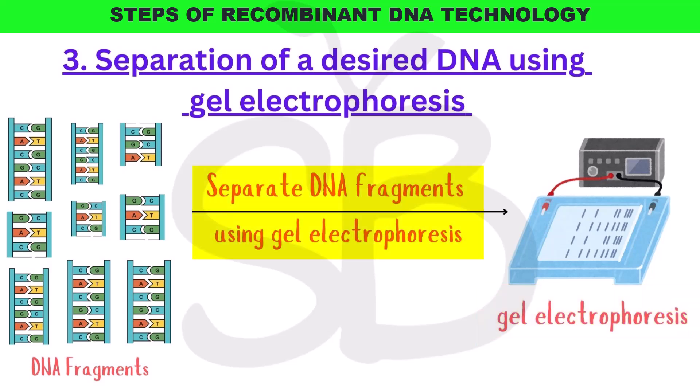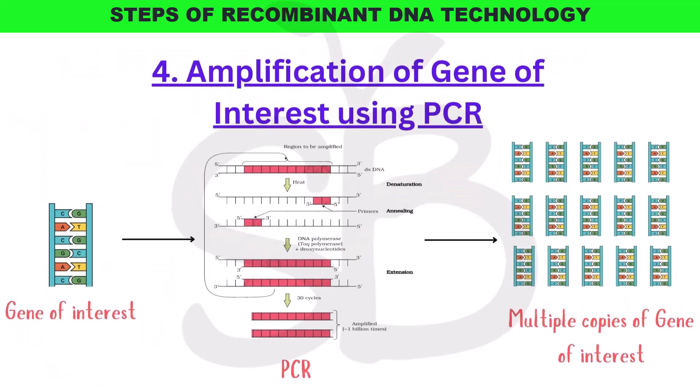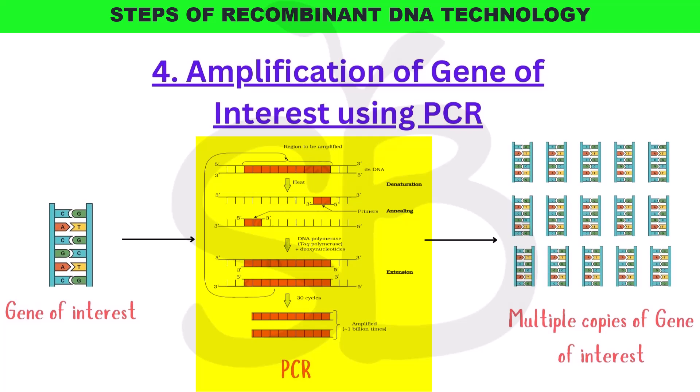The next step is amplification of the gene of interest using PCR — polymerase chain reaction. We find the DNA and make multiple copies of it. This process of polymerase chain reaction produces multiple copies of the particular gene.